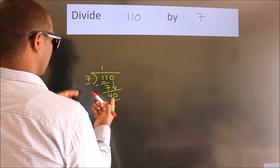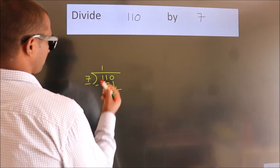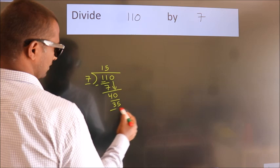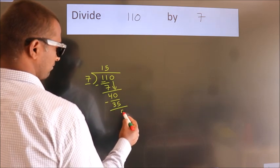A number close to 40 in the 7 table is 7 fives 35. Now we subtract. We get 5.